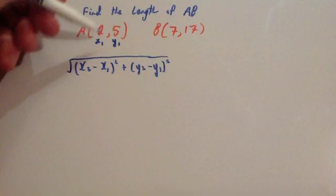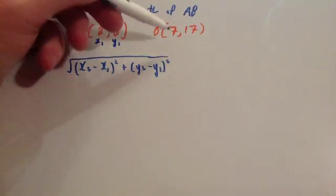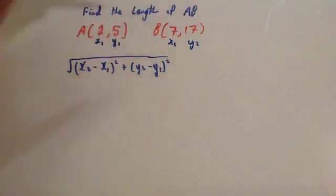Remember, the first number is the x-coordinate, the second number is the y-coordinate. This then would be x2, y2. So I'm going to substitute these values into the formula.